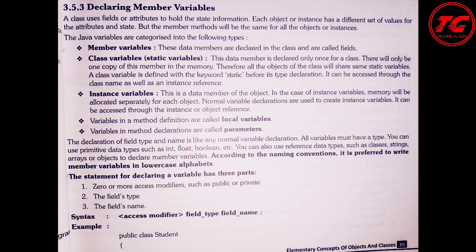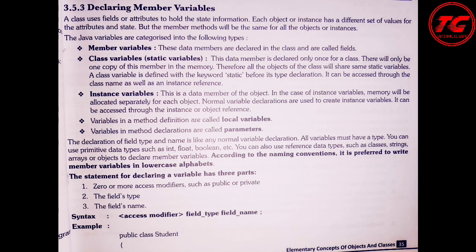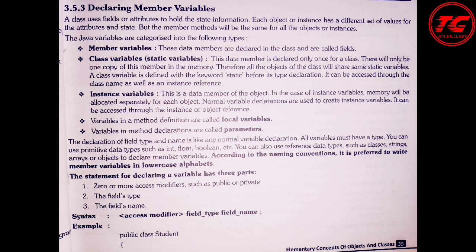If a school variable inside the Student class is static, and the school name is Sacred Heart Convent School, that variable will have a common value for all students — all students will have the same school name. So static variables have a same or common value, whereas instance variables have different values for different objects. Local variables are defined within a block — a class block, method block, or similar — and are limited to that block only. Parameters are variables declared inside a method declaration and are used to send information to methods.